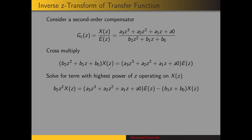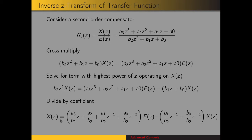That term is b2 z-squared X of z, so we solve for that term by bringing the other terms times X of z to the right-hand side. Now we divide by this coefficient to get the expression for X of z. We've divided both sides by b2 z-squared, and we're left with a3 over b2 times z, plus a2 over b2, plus a1 over b2 times z-inverse — all multiplied by E of z — and likewise for X of z.